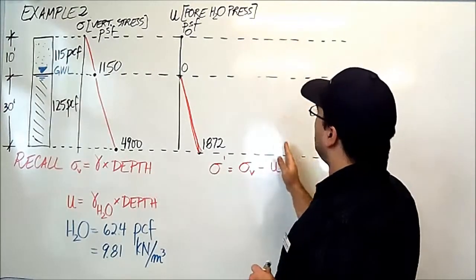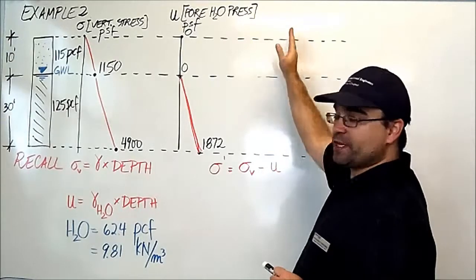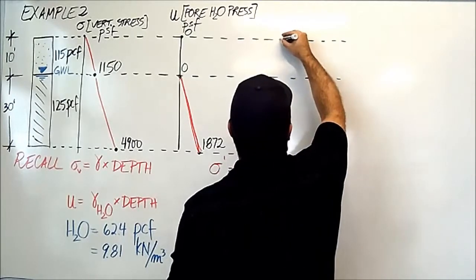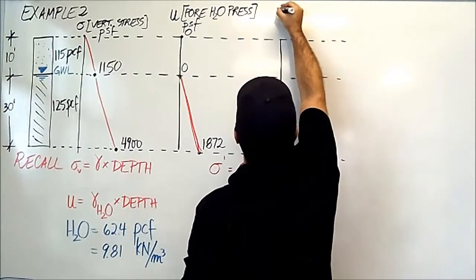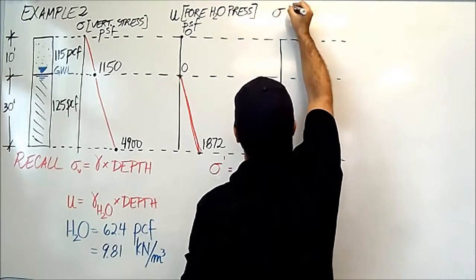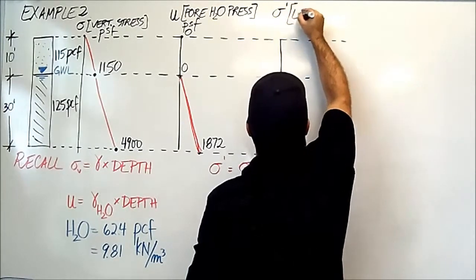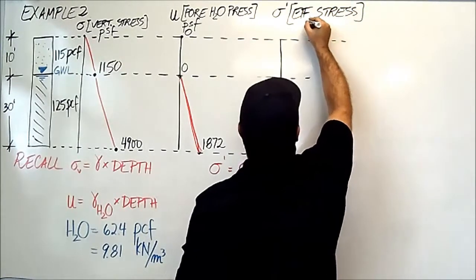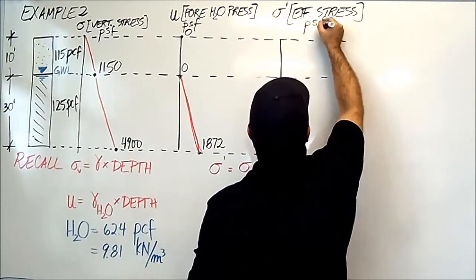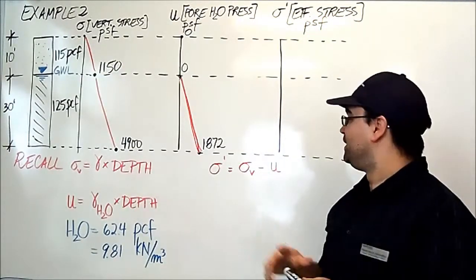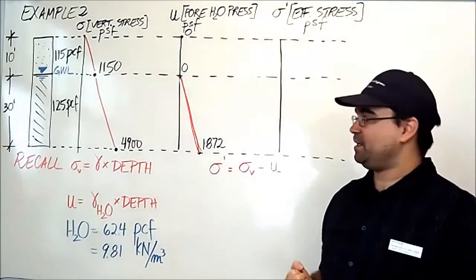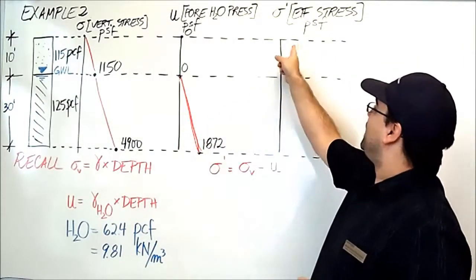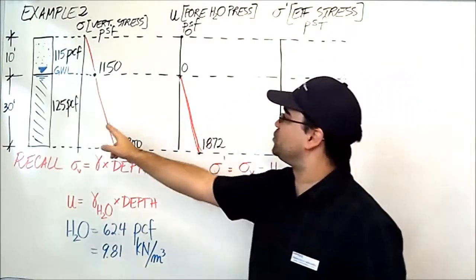So now on this side then, I'm going to draw the final stress distribution based on this calculation. So I'm going to draw another straight line. This is going to be for the effective stress, and it is going to be in pounds per square feet. And this one, of all of these, is the easiest one to calculate. Because if you have the vertical stress and if you have the pore water pressure, to get the values on this graph, you simply subtract the two.